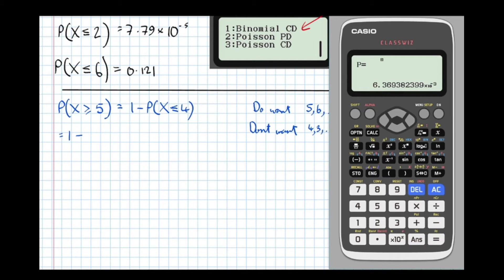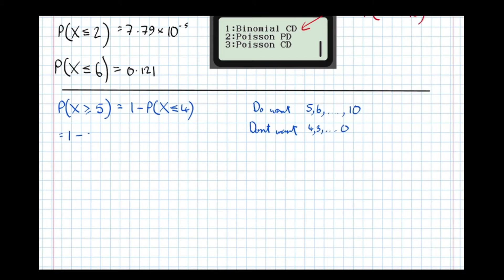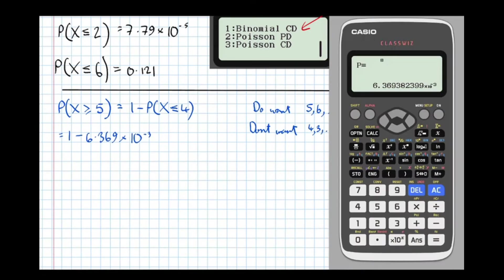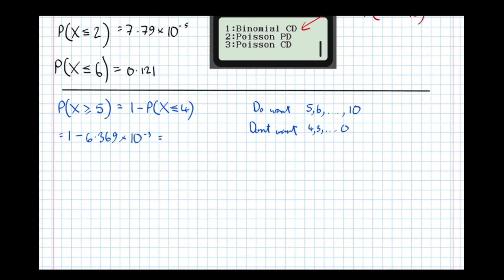So it's 1 minus that there — 1 minus 6.369 times 10 to the negative 3. That value is now stored in the answer button of the calculator. So if I press menu and go to ordinary calculation mode, if I do 1 minus answer, then I get a more precise number, which is 0.994.